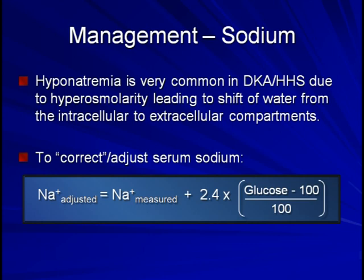So why do we care about the adjusted sodium at all? The reason it's important is in the situation where the adjusted serum sodium is still below the normal range. If that's the case, the patient must have another pathologic process contributing to hyponatremia beyond just the hyperglycemia and hyperosmolality — for example, SIADH, cirrhosis, or nephrotic syndrome. That's the only reason you should ever bother calculating this value.